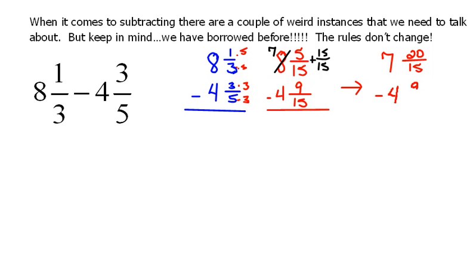Now we can subtract 4 and 9/15 from that. So 20/15 minus 9/15 equals 11/15, and 7 minus 4 equals 3. This is what happens when we have to borrow in dealing with fractions. We have to make sure we borrow that 1 and turn it into whatever size pieces we're working with.